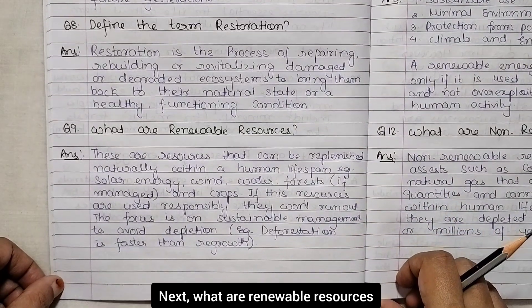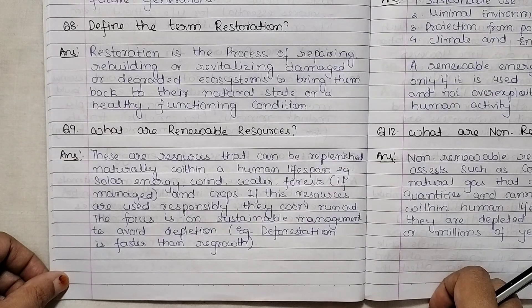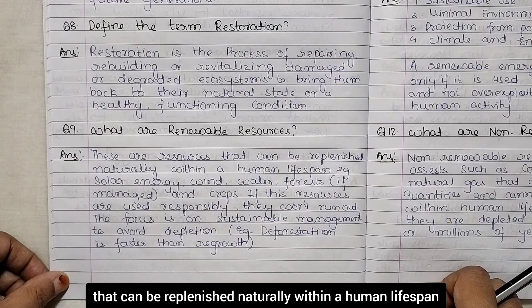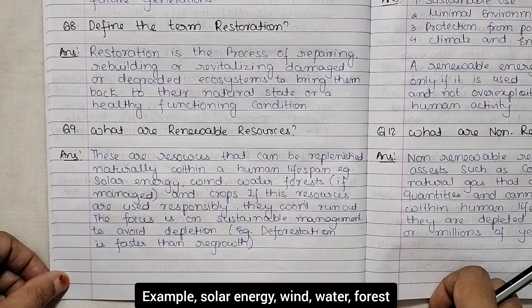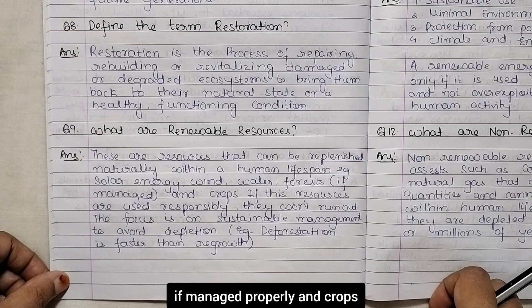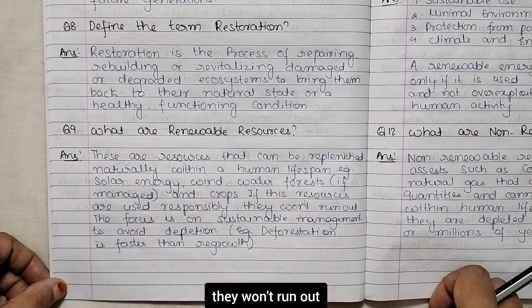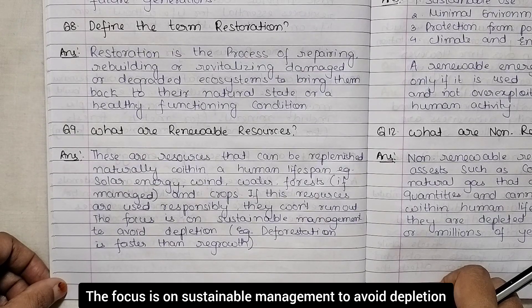Next: what are renewable resources? These are the resources that can be replenished naturally within a human lifespan. Examples include solar energy, wind, water, and forests if managed properly, and crops. If these resources are used responsibly, they won't run out. The focus is on sustainable management to avoid depletion.